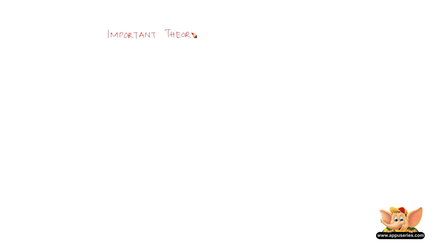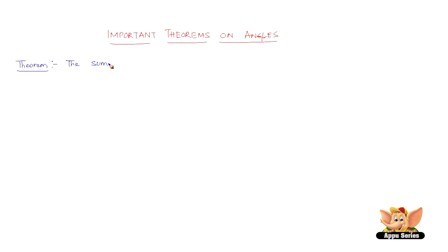Here, let us see some of the important theorems about angles. The theorem states that the sum of all the angles around a point is equal to 360 degrees.